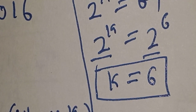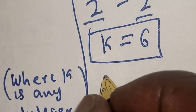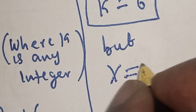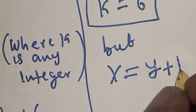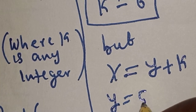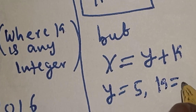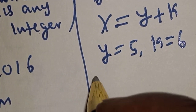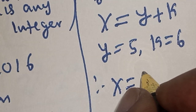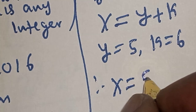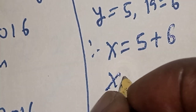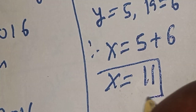We have found K equals 6 and Y equals 5. Since X equals Y plus K, substituting gives X equals 5 plus 6, therefore X equals 11. That is the value of X.